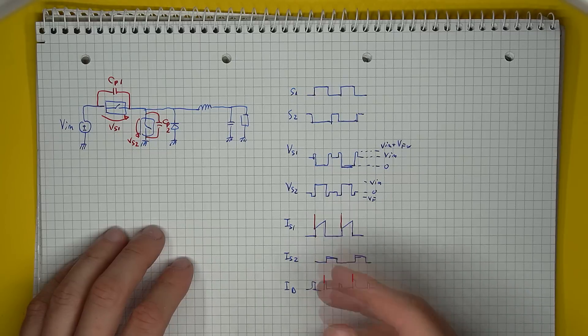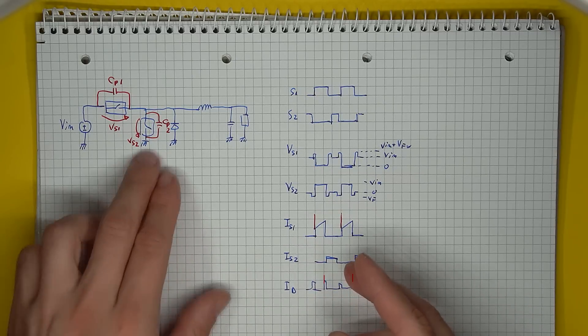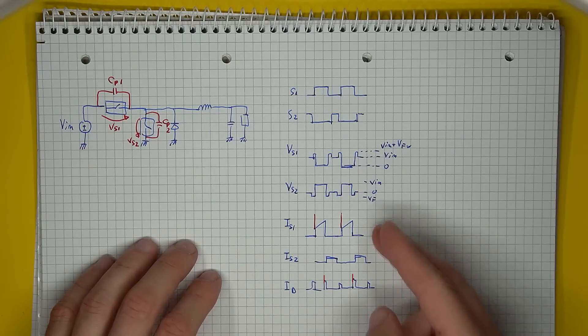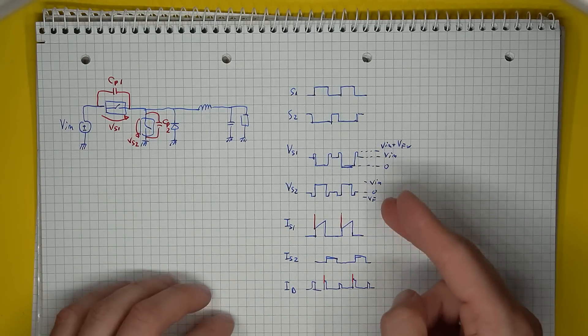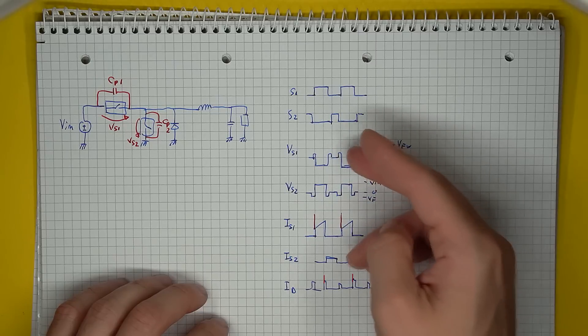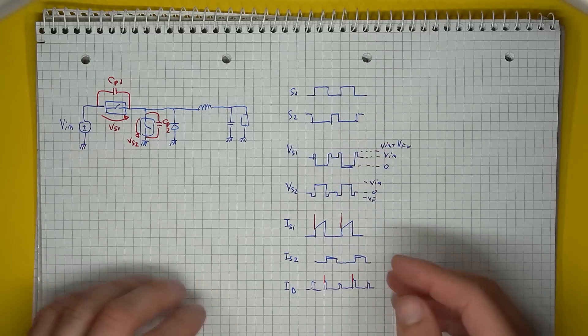The low side transistor does not see this problem, or at least not to this extent, since its parallel capacitance needs to switch from the forward voltage to zero, and the same variation is also occurring on the other parallel capacitance.